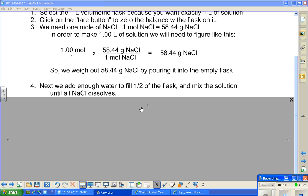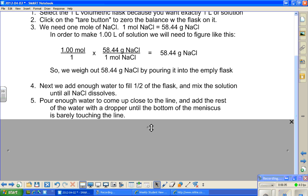So we added enough to make half-full. Then we pour enough to come up close to the line and add the rest of the water with a dropper until the bottom of the meniscus is barely touching the line.